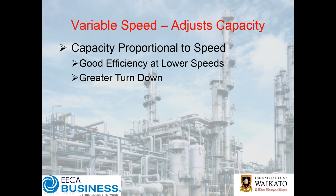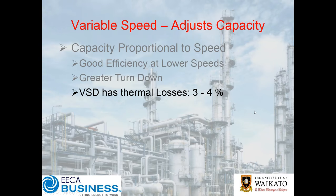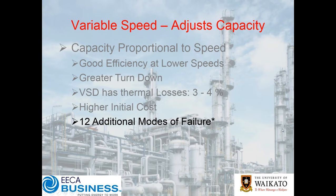Variable speed units offer proportional speed control with slightly better efficiency at low-end speeds. You can get slightly better turn-down, but you do have thermal losses from the VSD and a higher initial cost. A big thing that gets often overlooked is that it introduces quite a number of additional modes of failure.